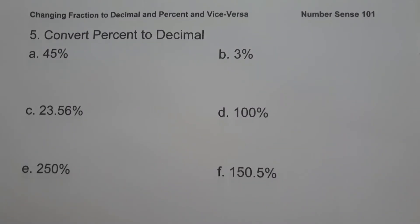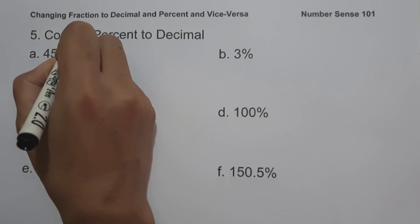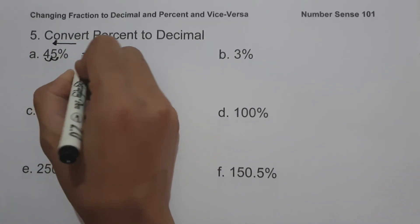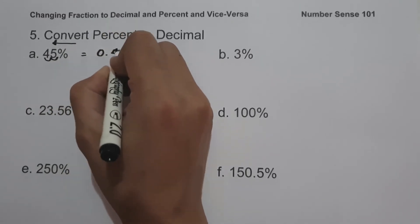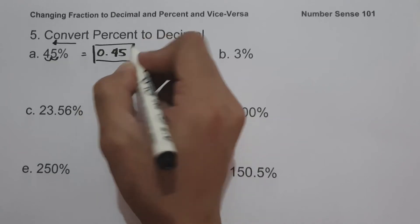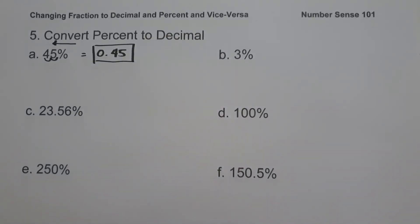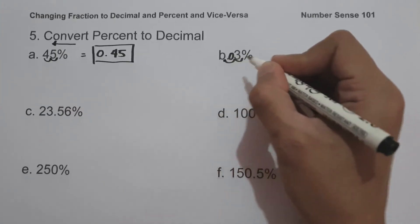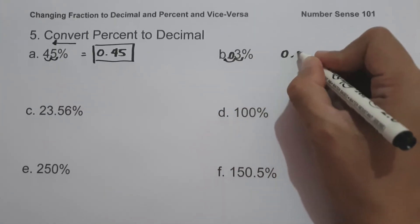On the fifth set of examples, we convert percent to decimal. In converting percent to decimal, we simply move two decimal places from right to left. On letter A, we have 45%. Moving two decimal places from right to left gives us 0.45. On letter B, we have 3%. Moving two decimal places and adding a zero gives us 0.03.